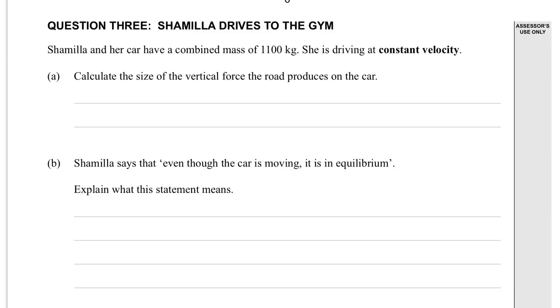2014 Level 2 Mechanics Question 3: Shamila drives to the gym. Shamila and her car have a combined mass of 1,100 kilograms. She's driving at a constant velocity, so a equals zero.